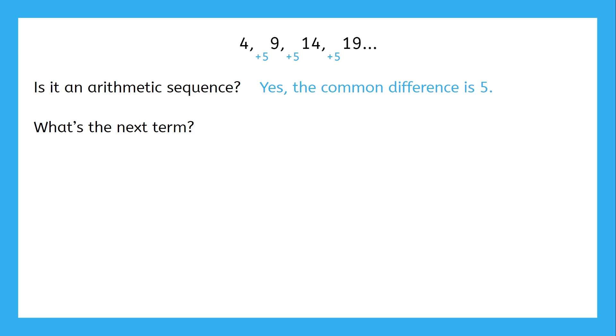Then what's the next term in the sequence? Well, since the common difference is 5, if we take the last term, 19, and add 5 to it, we find that the next term is 24.